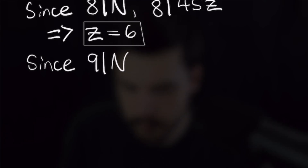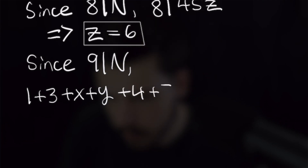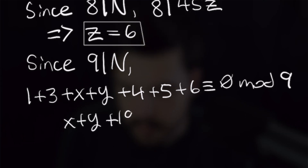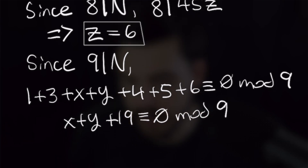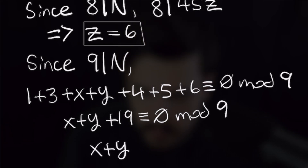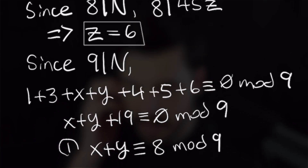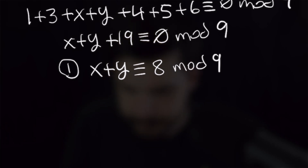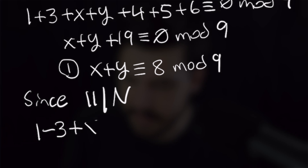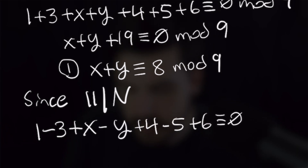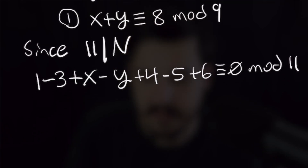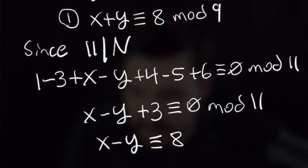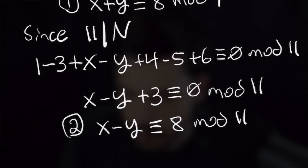Next we apply the divisibility rule for 9: 1 + 3 + x + y + 4 + 5 + 6 ≡ 0 mod 9. This gives x + y + 19 ≡ 0 mod 9, so x + y ≡ −19 ≡ 8 mod 9. Then applying the divisibility rule for 11 as an alternating sum: 1 − 3 + x − y + 4 − 5 + 6 ≡ 0 mod 11, which gives x − y + 3 ≡ 0 mod 11, so x − y ≡ −3 ≡ 8 mod 11.